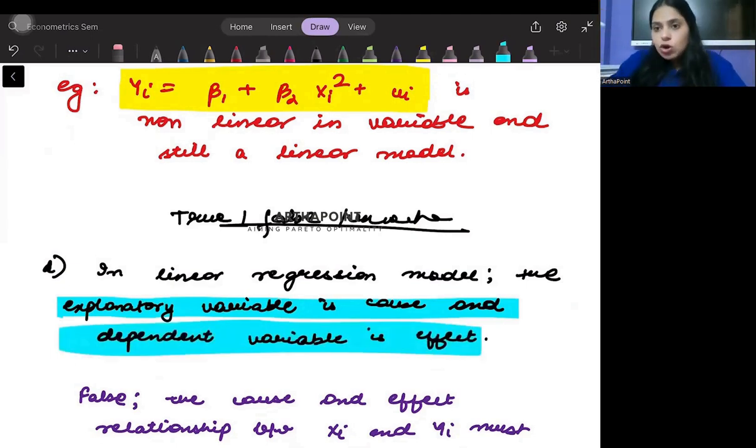Again, refer back to your textbook. Regression is in no way related to cause and effect relationship. We don't talk about causal effect relationship in regression. Cause and effect relationship is always explained through theoretical concepts, through theory.